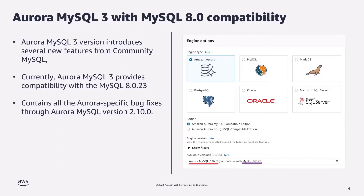When you launch an Amazon Aurora MySQL 3 cluster, you can launch it with MySQL Community Edition version 8.0.23 compatibility, available in all regions where Amazon Aurora is supported. You may wonder why there are two version numbers. The version number Aurora MySQL 3.0.2.1 shows the Aurora major and minor version, while the latter part shows MySQL Community Edition compatibility — so Aurora MySQL 3.0.2.1 is compatible with MySQL Community Edition 8.0.23. Aurora MySQL 3.0 also contains all Aurora-specific bug fixes through Aurora MySQL 2.10.0.